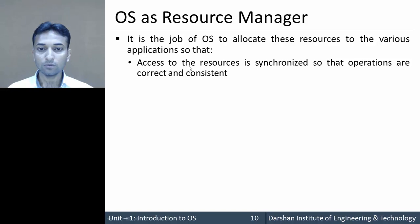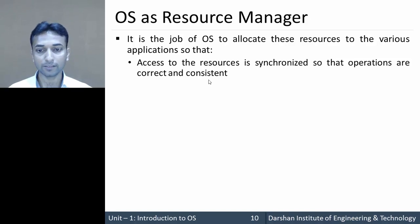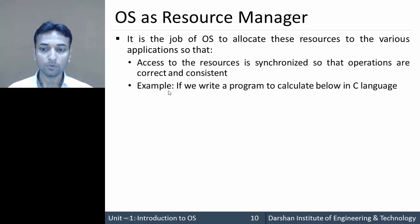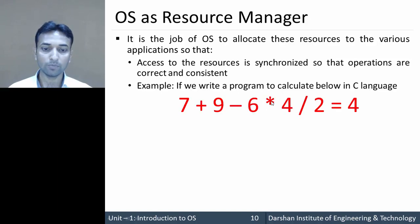Third, access to resources is synchronized so that operations are correct and consistent — there should be synchronization between each process so the final result is consistent and correct. For example, consider the expression 7 + 9 − 6 × 4 ÷ 2 in C language. Since multiplication and division have higher precedence than addition and subtraction, the correct answer is 4.